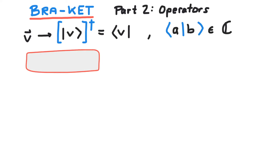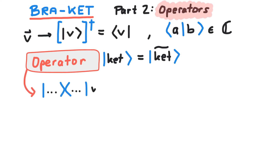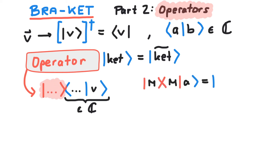What do we have to multiply onto a ket to get again a ket as a result? This is where operators come into play. Operators in the bra-ket notation usually have the following form. And really, if we multiply this onto a ket vector, we get another ket vector in return. Operators to kets are what matrices are to vectors.